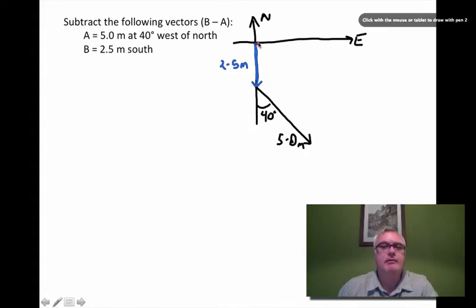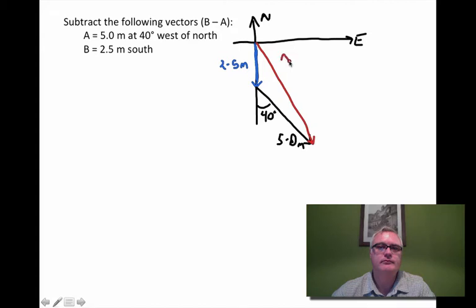And then my resultant vector, sorry, B minus A, is this vector here. So I need to know the length of this vector. And I need to know the direction. So I'll need to find this angle.